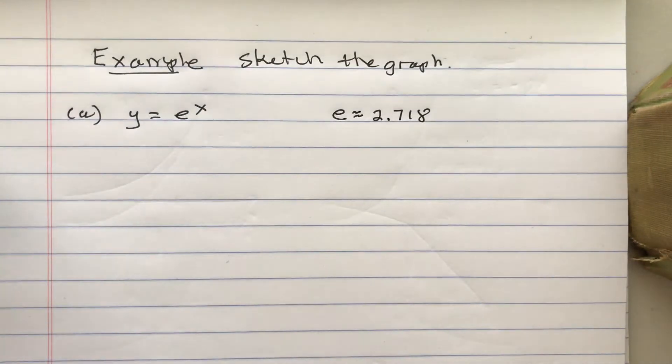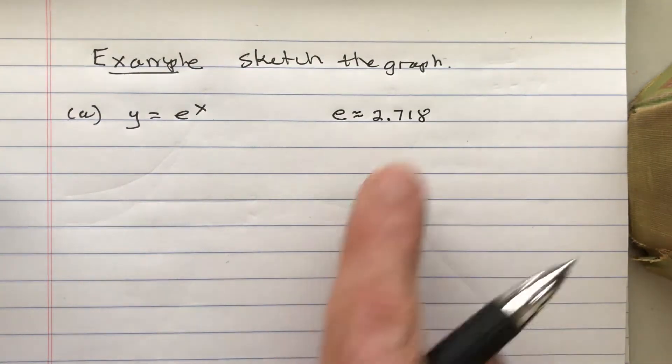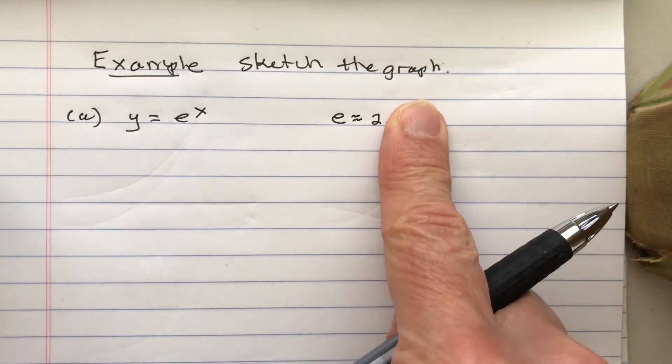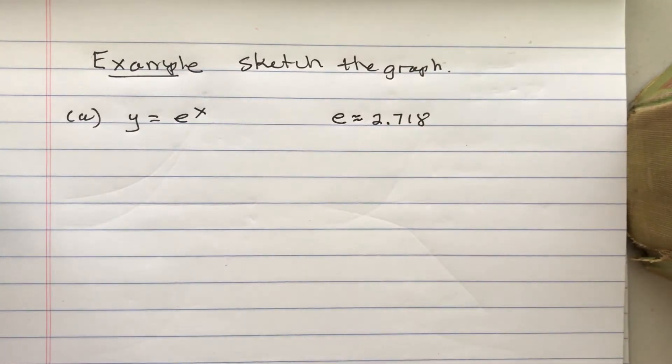But when I get stuck and need to plot points, I'm just going to cheat and say that's 2 or 3. I won't plot the point exactly, but just to help me.